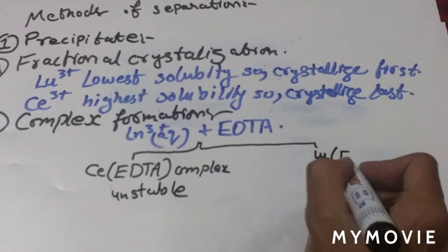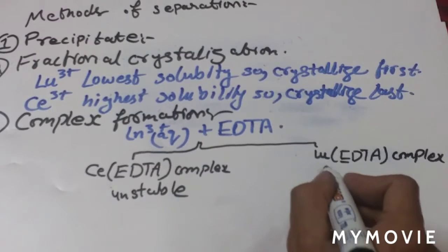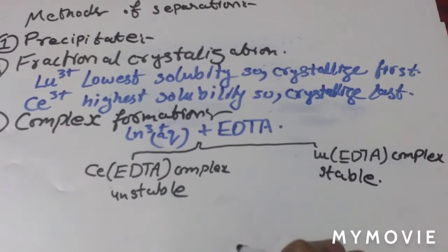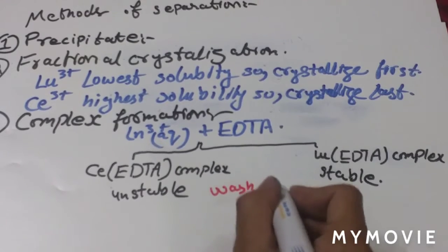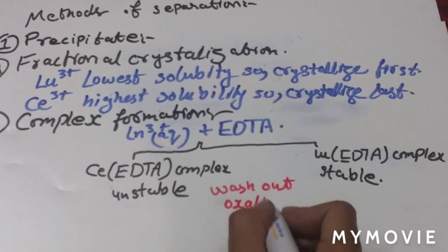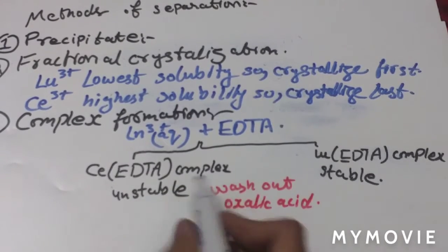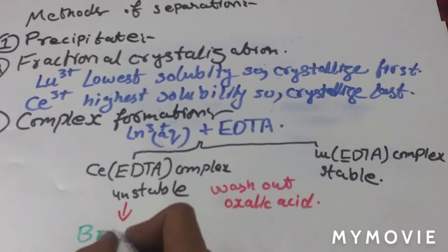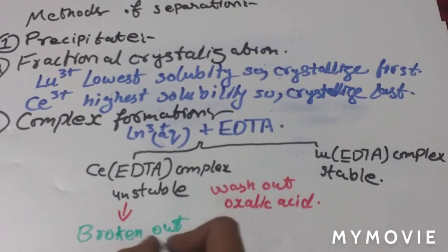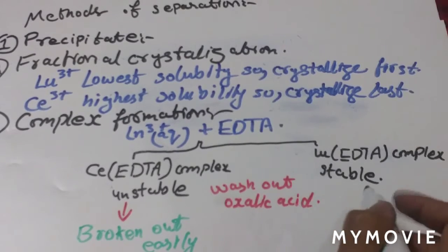Lutetium reacts with EDTA to form a lutetium-EDTA complex, which is stable as compared to the cerium-EDTA complex. When we wash with oxalic acid, the cerium-EDTA complex breaks apart easily because it is unstable, whereas the lutetium-EDTA complex is stable and does not break apart easily.